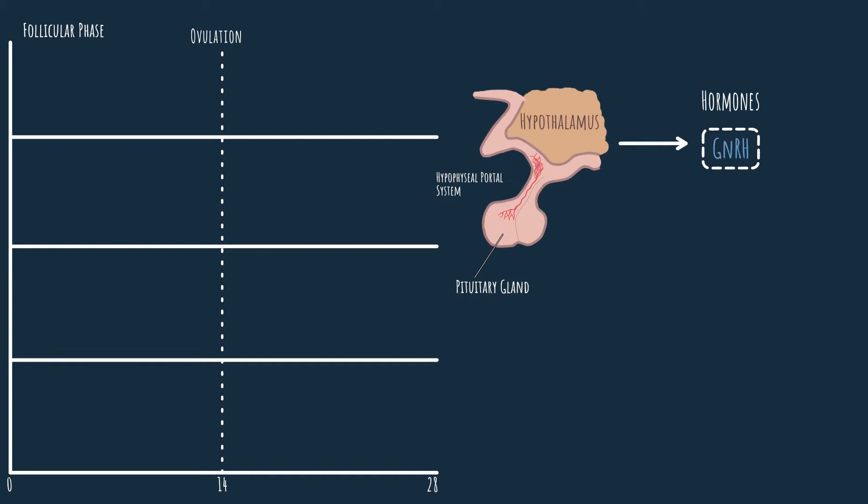And we can see it here, it is right below the hypothalamus. We can also see that the pituitary gland is divided into two portions: the anterior pituitary and the posterior pituitary. But we only care about the anterior pituitary. When GnRH reaches the anterior pituitary, it acts on cells called gonadotropes. Under the influence of GnRH, these gonadotropes secrete two hormones known as gonadotropins.